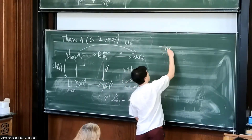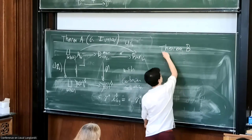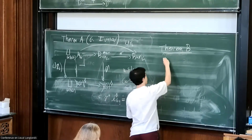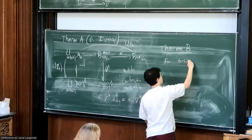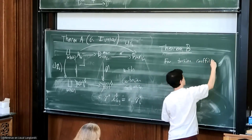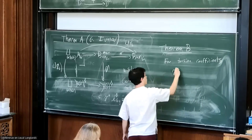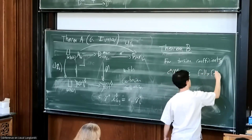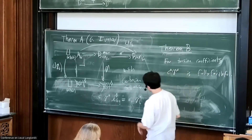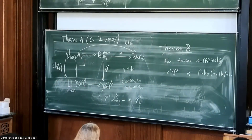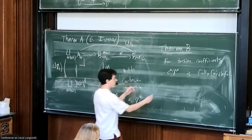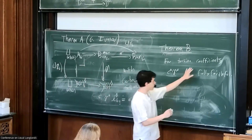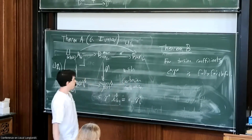This is related to Theorem B. For torsion coefficients, gamma-star C-star is fully faithful. We're not entirely sure we have the correct cohomological framework, so I don't want to claim this is the correct functor, but I'm fairly convinced this is the correct space — at least with torsion coefficients we can prove this is a fully faithful functor.